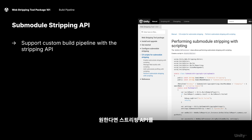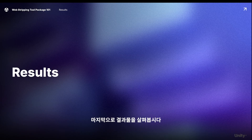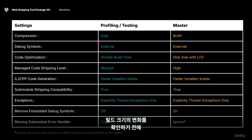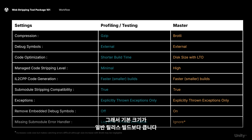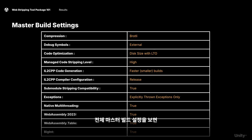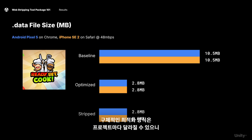You can also optionally use the stripping API to further integrate into your custom build pipeline. Before we look at the build size changes, here are the differences in settings between our profiling phase and our release build. Remember that our profiling phase is set up to ensure build times are faster, so its base size will be larger than your typical release build. For the full master build settings, we also enable WebAssembly 2023 target, amongst other things listed here. Your optimizations may vary depending on your project.